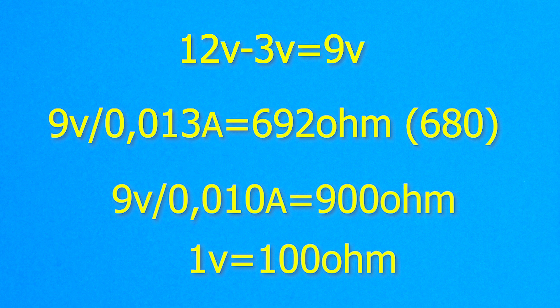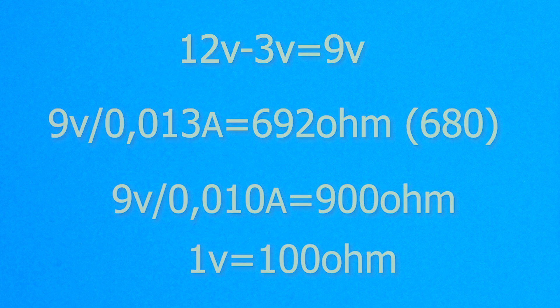If maximum brightness is not needed, then the resistor can be taken 1.5 or 2 times more. Even when choosing a resistor, it is necessary to take into account its power. With a small voltage and current strength, you can close your eyes to this.